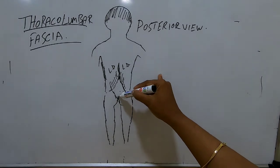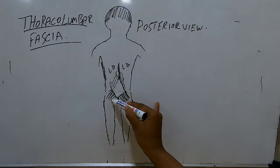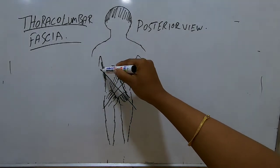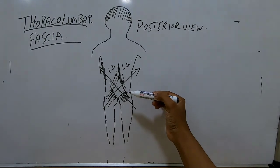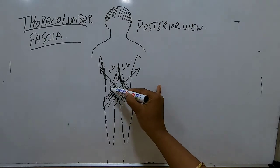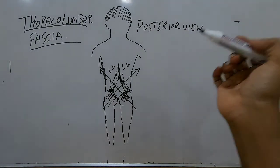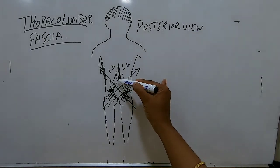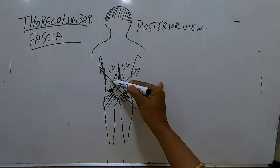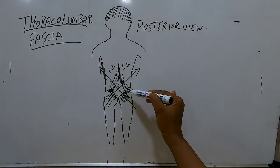It also gives attachment to gluteus maximus. These form a single vector posteriorly, which helps perform rotational movement. Looking at the posterior view and its attachments: it attaches to the spinous process, to gluteus maximus, to latissimus dorsi, to the iliac crest, and goes anteriorly to attach to the abdominal muscles.